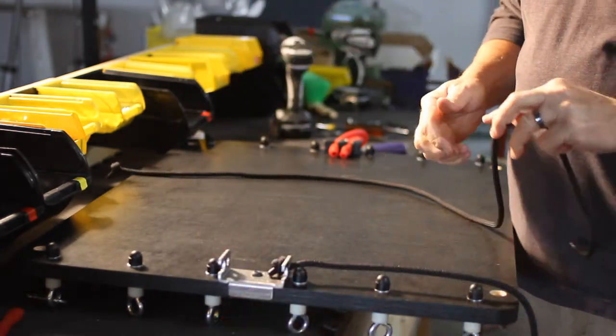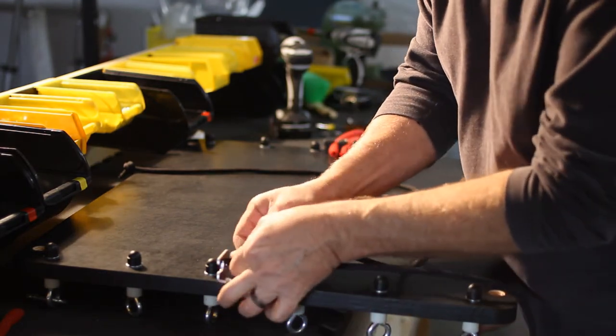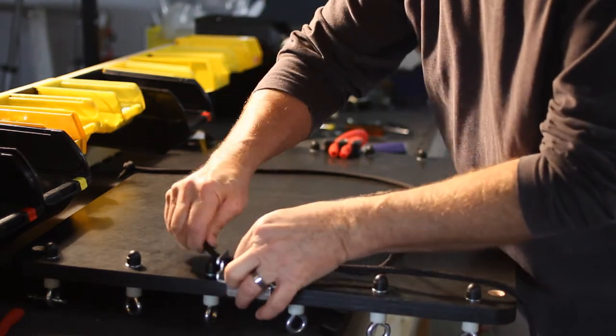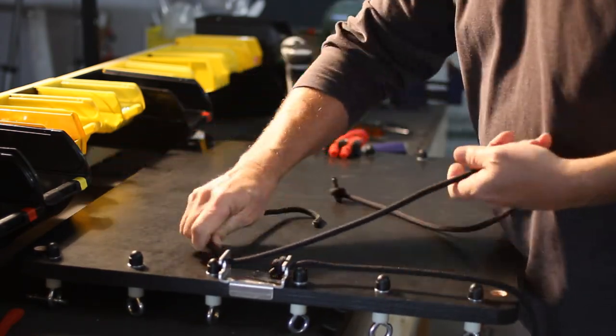I'm showing why I applied the arrestor rope first, because when I go back to do this, it becomes a little bit difficult to feed this through. It can be done, but it's just a little bit easier to do it before you attach the bracket onto the board.